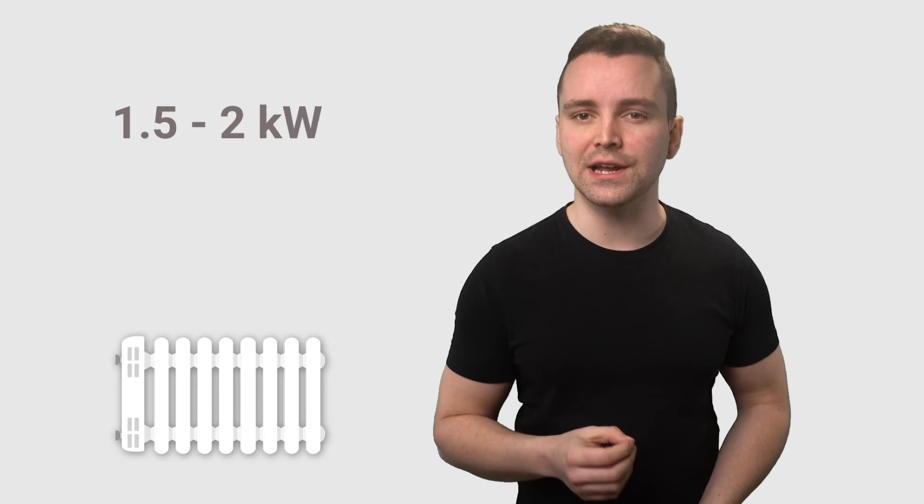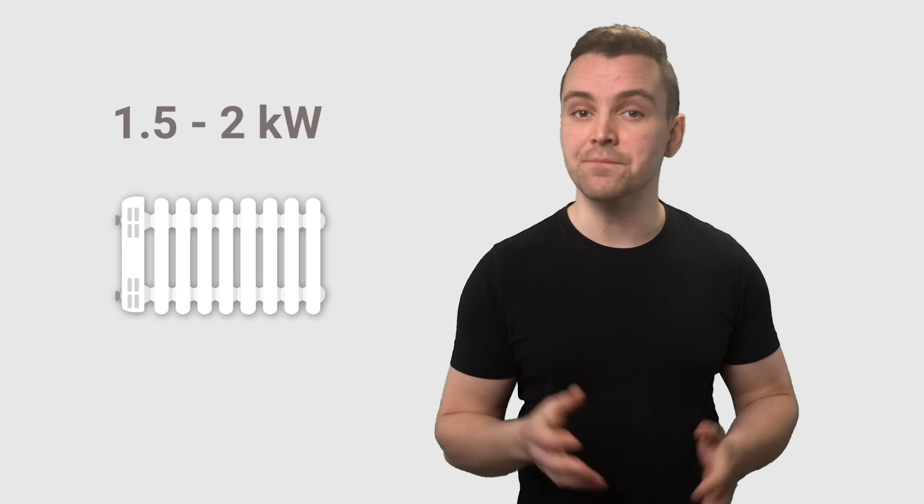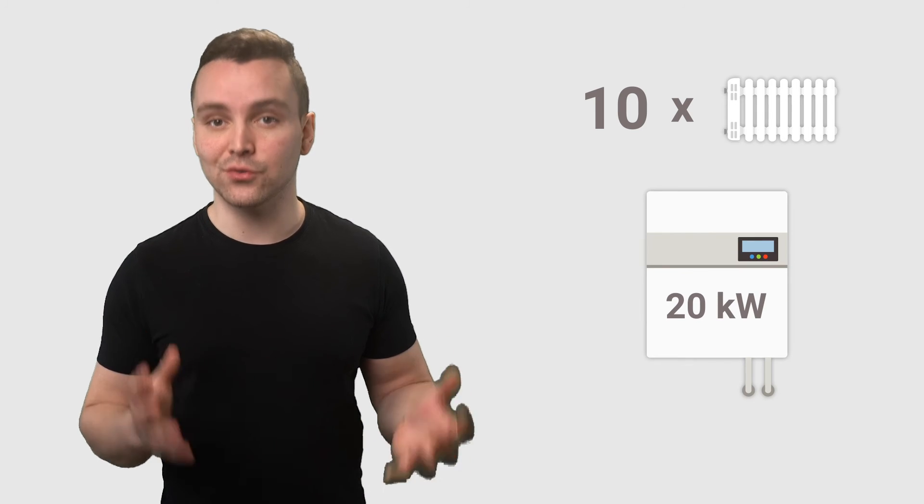A good way to work out what output size is best for your home is to allow for 1.5 or 2 kilowatts for every radiator in your home. For example, a home with 10 radiators would need a boiler with an output of around 20 kilowatts.